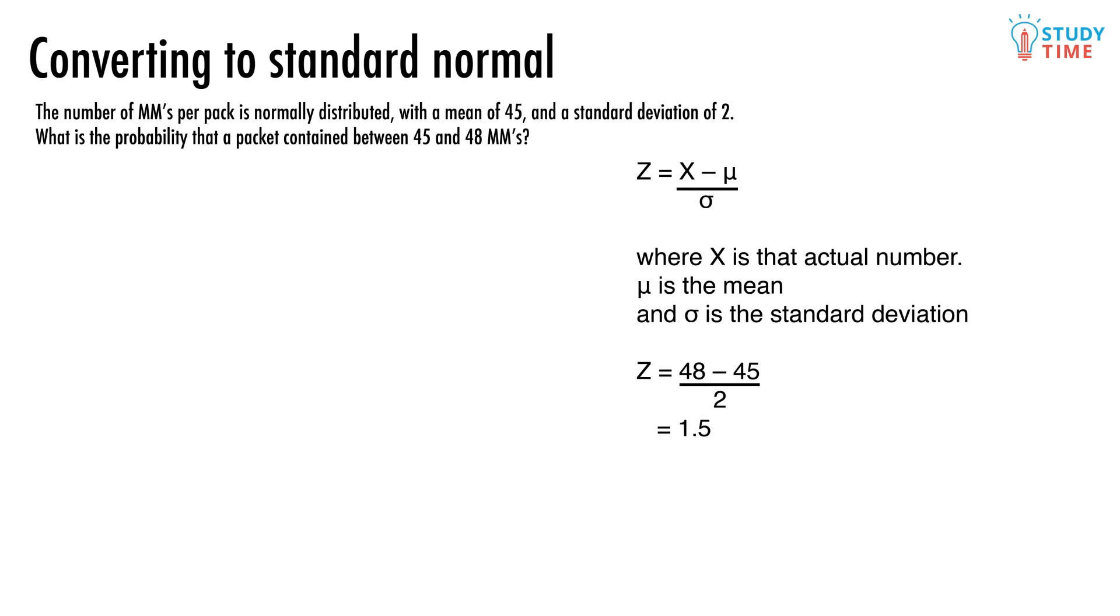So we stick these three numbers into the formula: Z equals 48 minus 45 divided by 2, equals 1.5. Which, come to think of it, looks about exactly right.